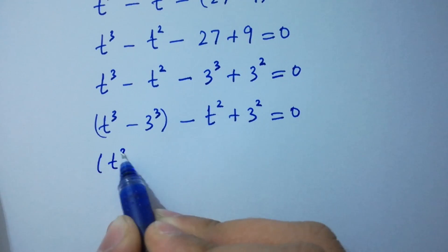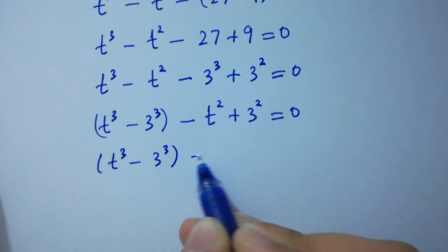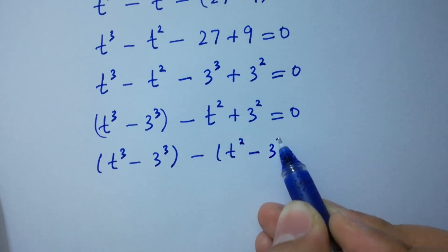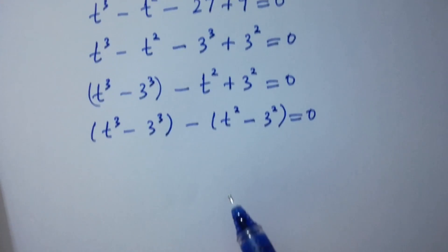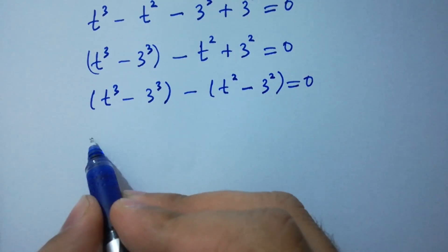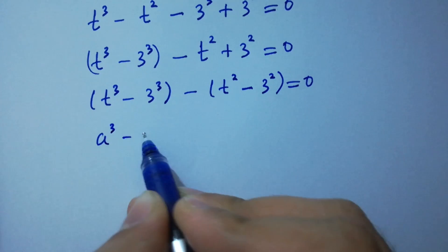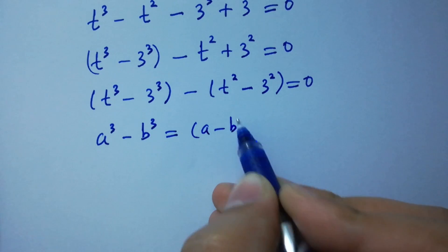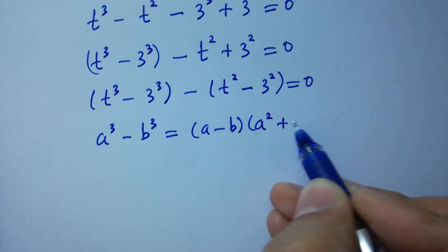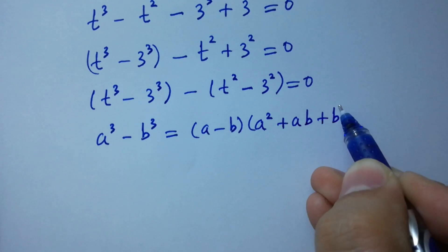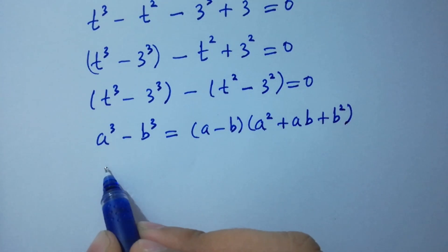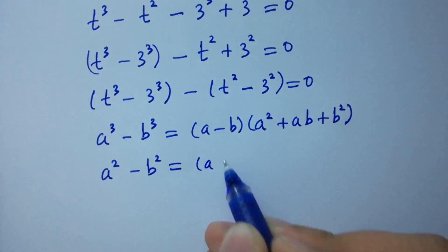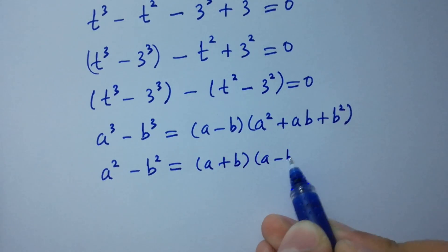So t cube minus 3 cube minus (t square minus 3 square) equal to 0. As we know, a cube minus b cube equal to (a minus b)(a squared plus ab plus b squared), and a square minus b square equal to (a plus b)(a minus b).